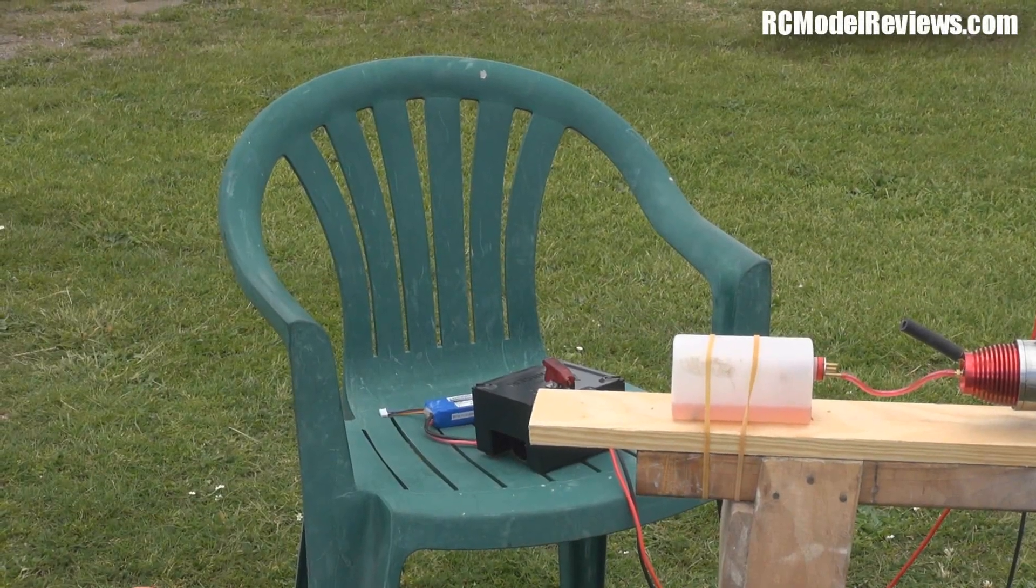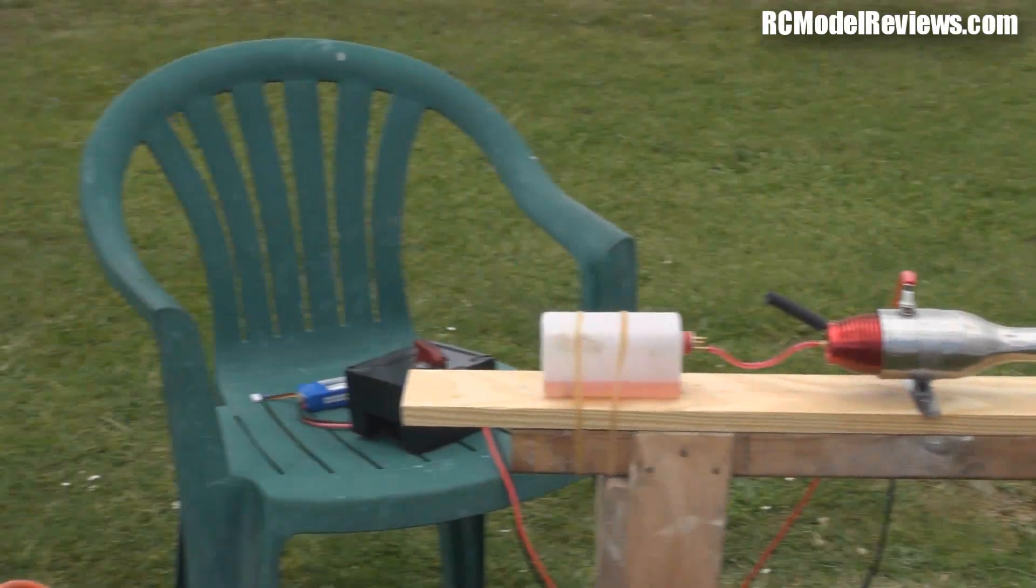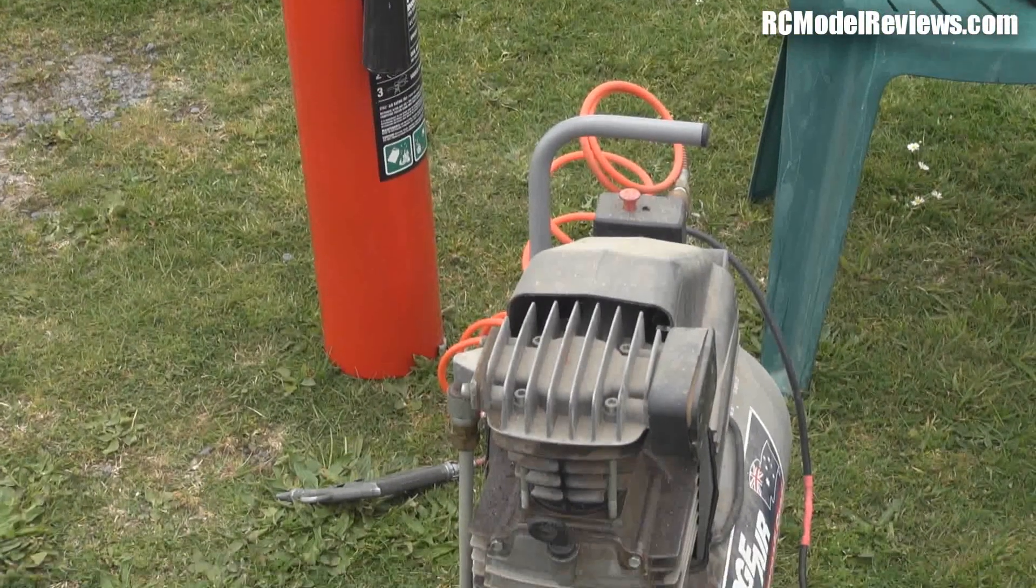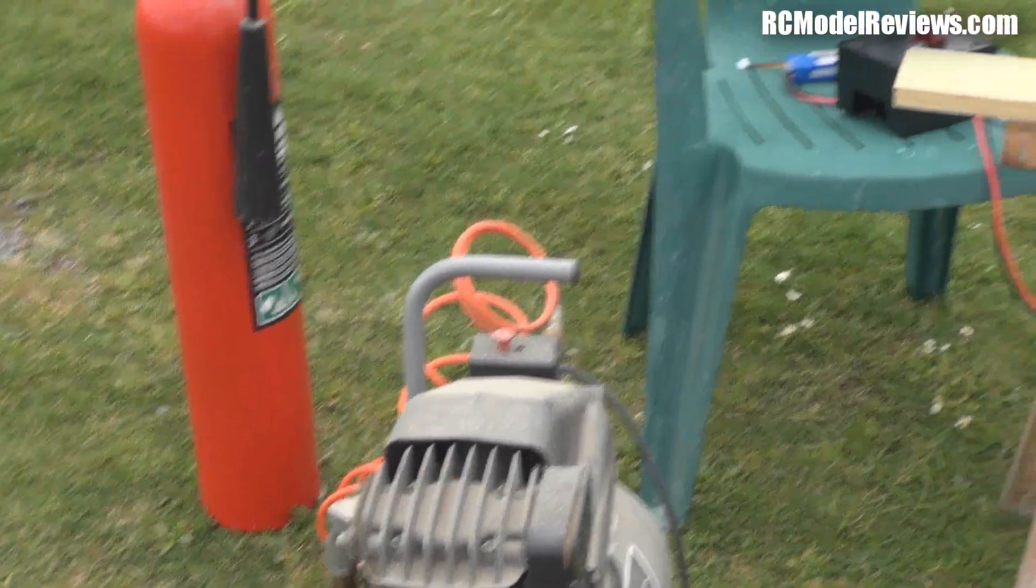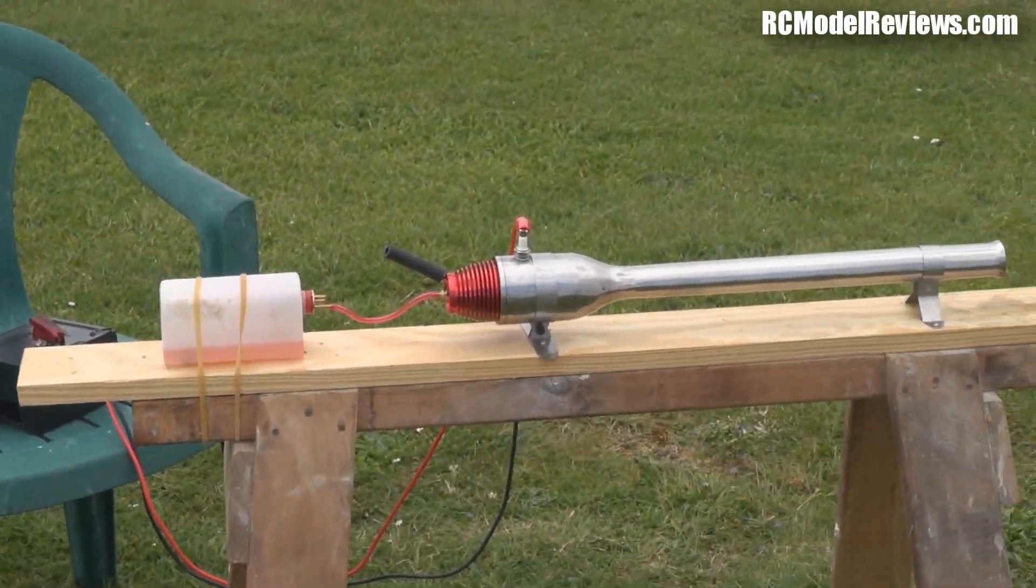Hello there and welcome to RC Model Reviews and it's the Hobby King Pulse Jet. As you can see I've got a fire extinguisher, got a compressor down here which is going to provide the necessary puff, got the ignition system over there on that chair. I've mounted the Hobby King Pulse Jet on this piece of wood which is now screwed to the top of a sawhorse.